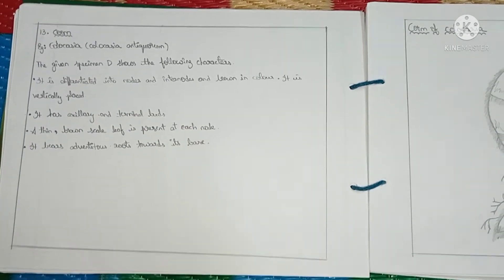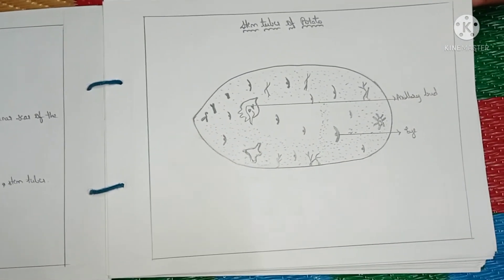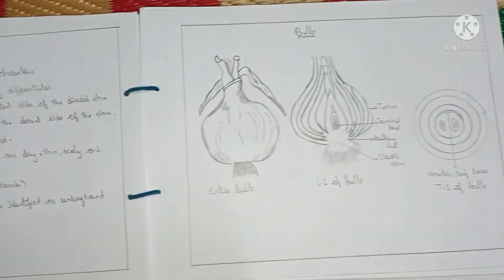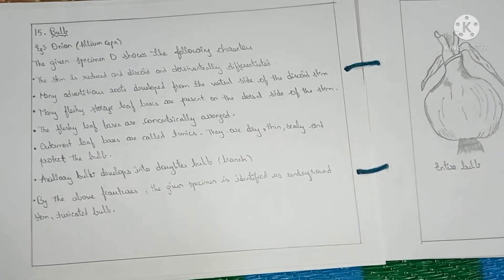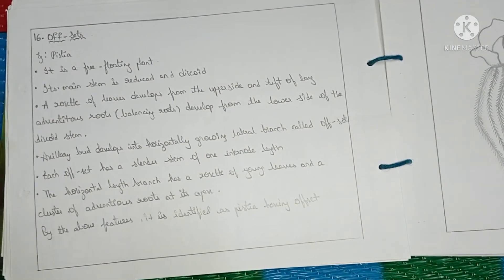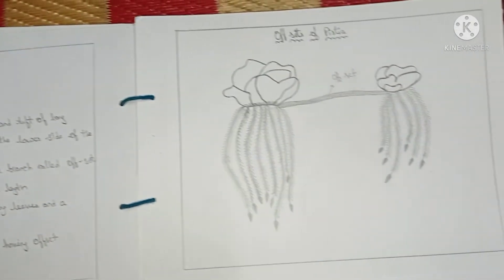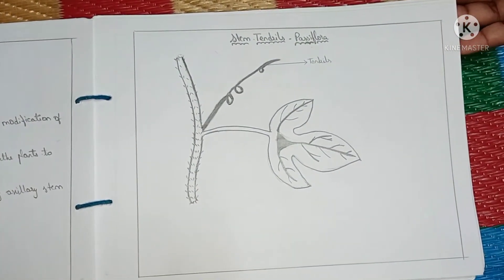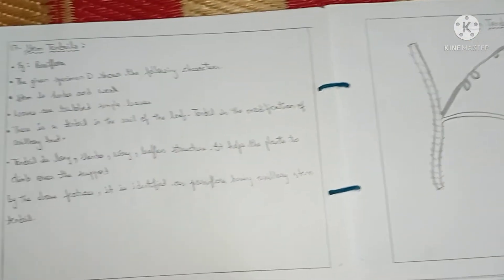Modified stems covered include: details of stem tuber with potato as example and diagram of potato, diagram and details of bulb with onion as example, details of offsets with Pistia as example, diagram of Pistia, and diagram of stem tendrils.